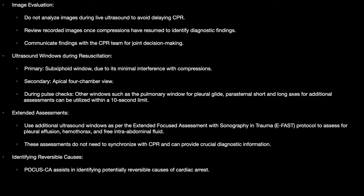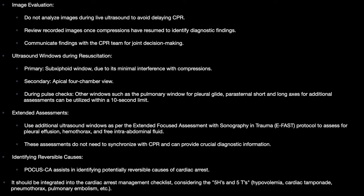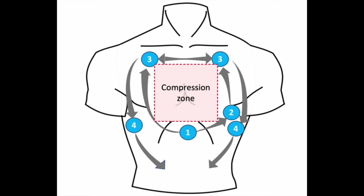The main objective is to identify reversible causes of cardiac arrest, integrating this into the cardiac arrest management checklist considering the 5Hs and 5Ts. A sequential cycle can be used: first, start with the subcostal view; in the second break, move to the apical view; then do parasternal and pleural views; and finally, if the patient has not recovered, perform an abdominal assessment as well.